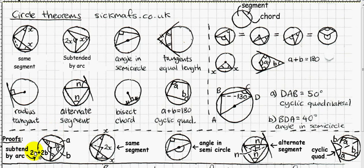Now let's look at the proofs. To prove the centre-circumference angle rule, draw a dotted radius line. Since you have two radii, label the equal base angles A and A in one triangle and B and B in another. The apex angles are then 180 minus 2A and 180 minus 2B. The centre angle is 360 minus those two angles, which simplifies to 2A plus 2B.